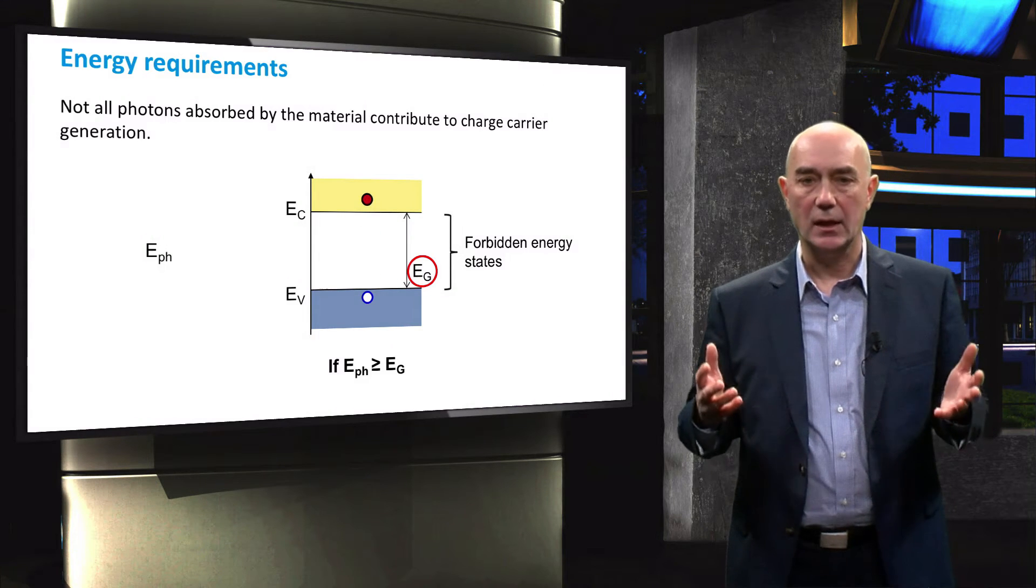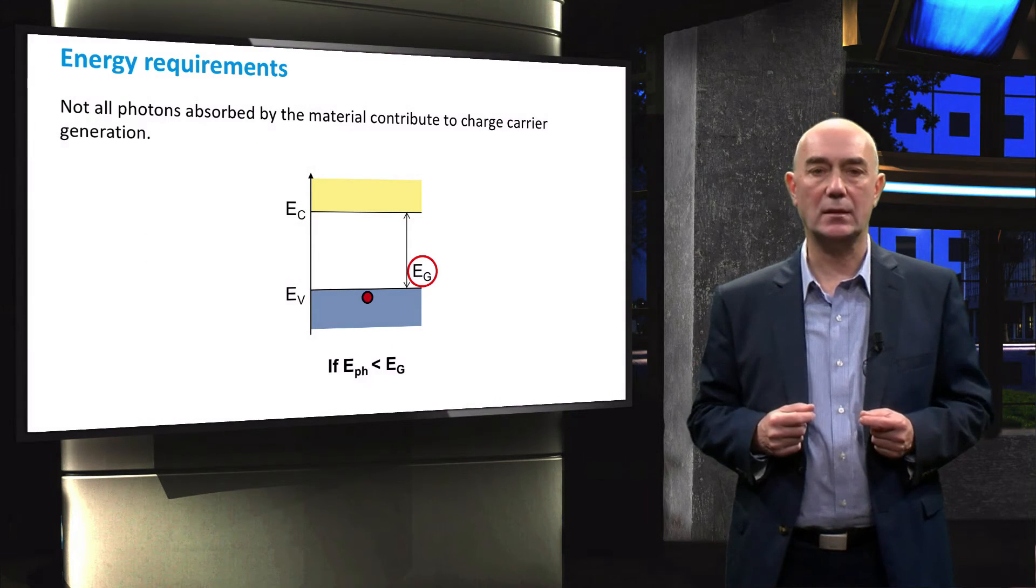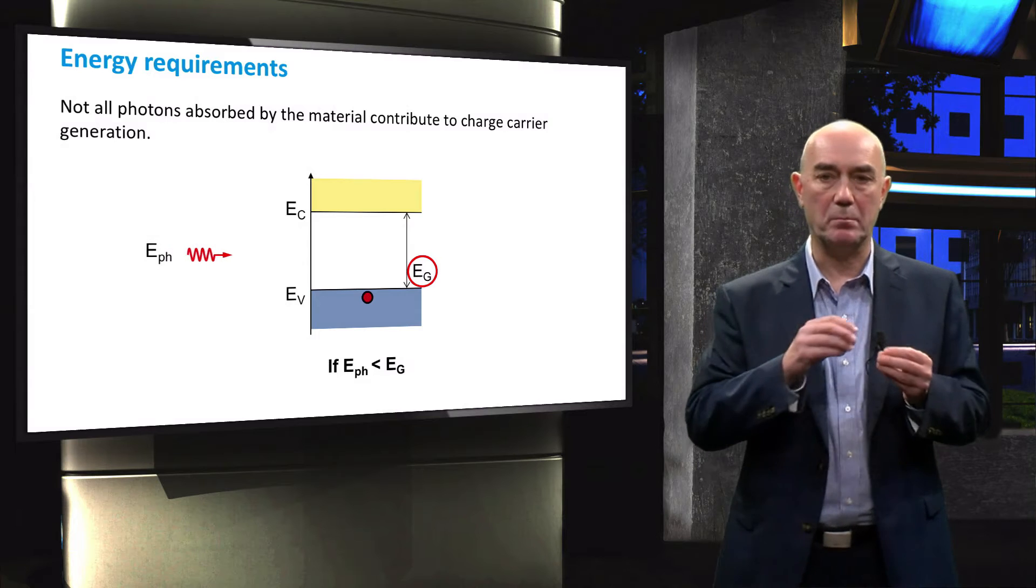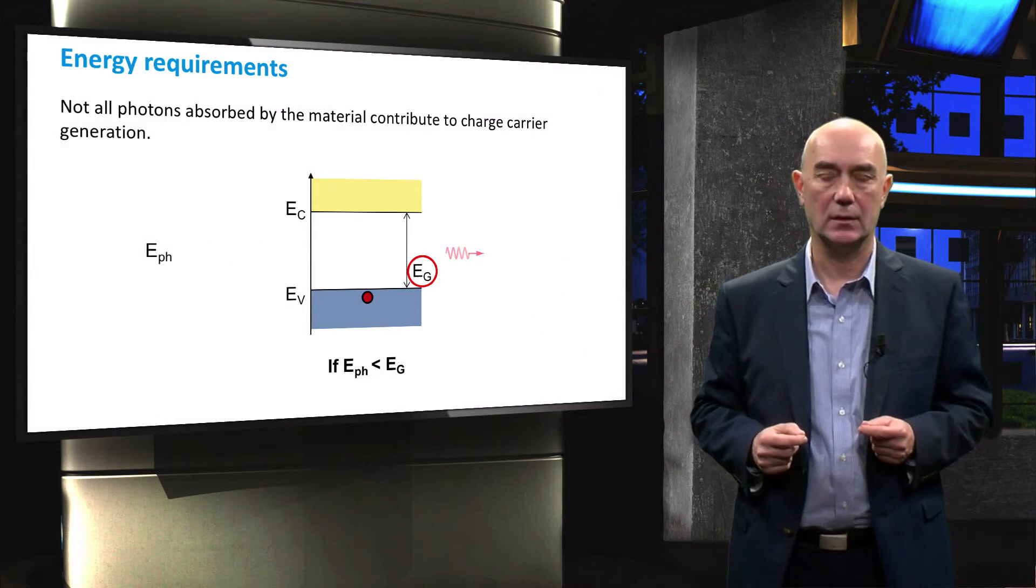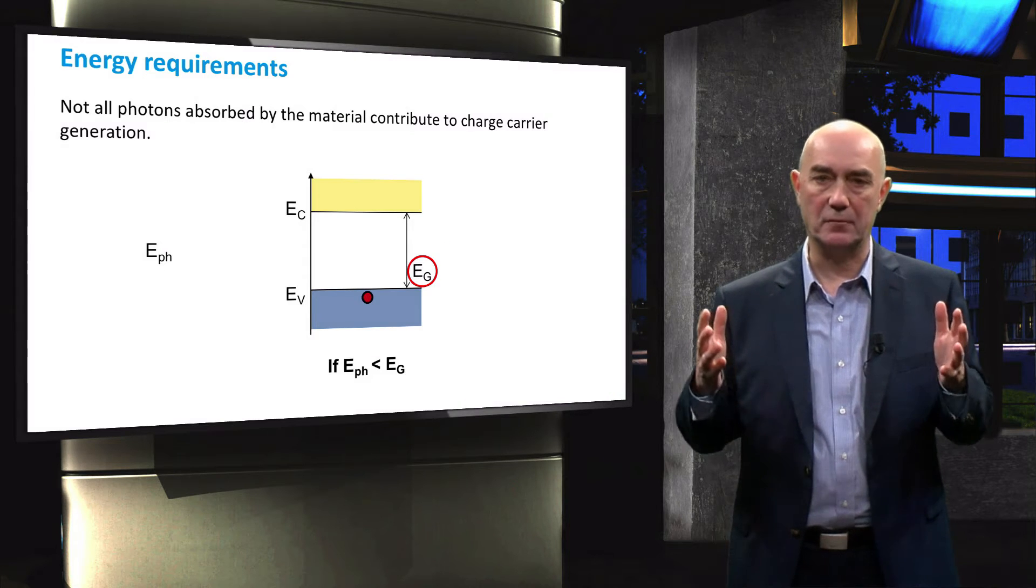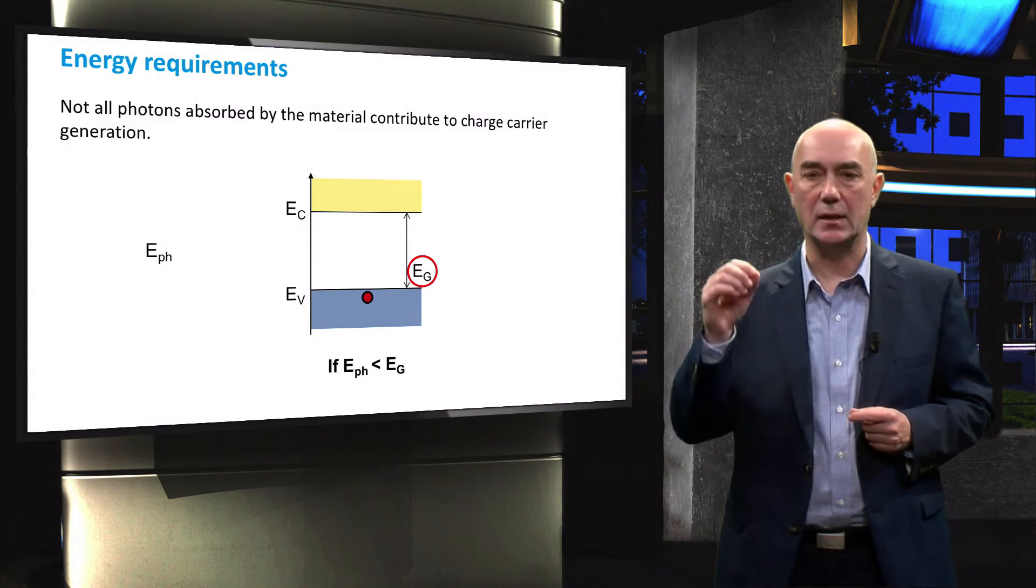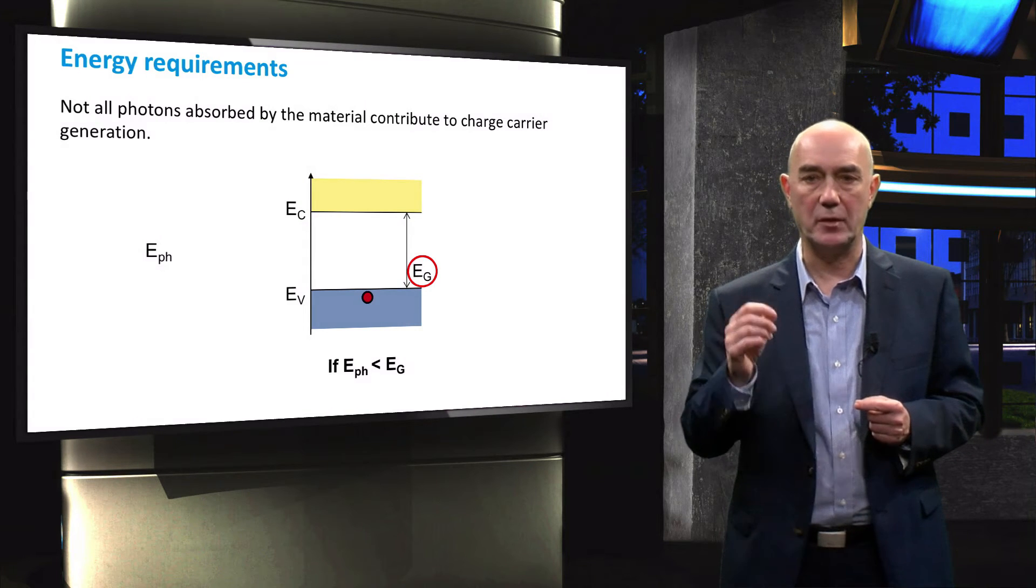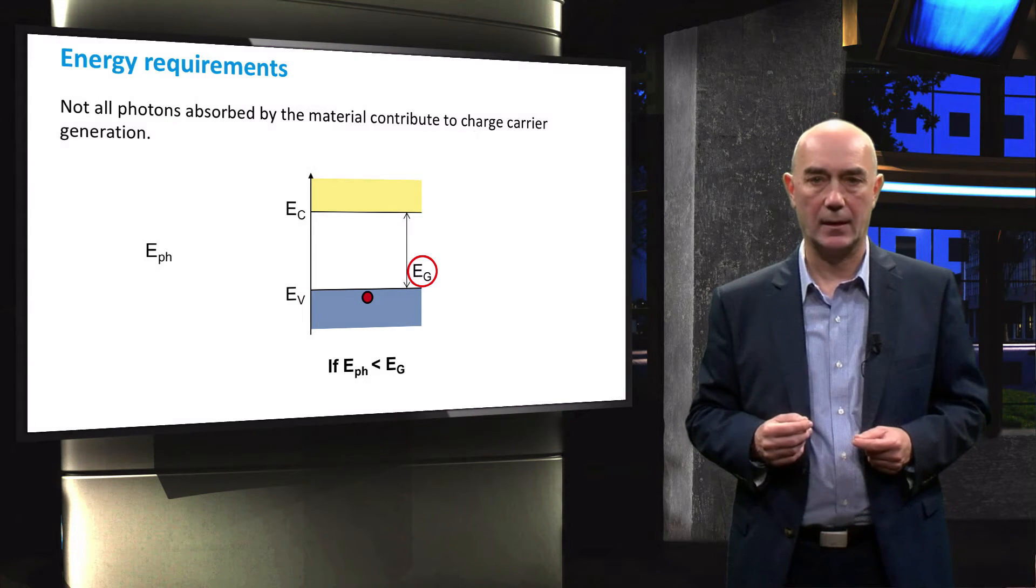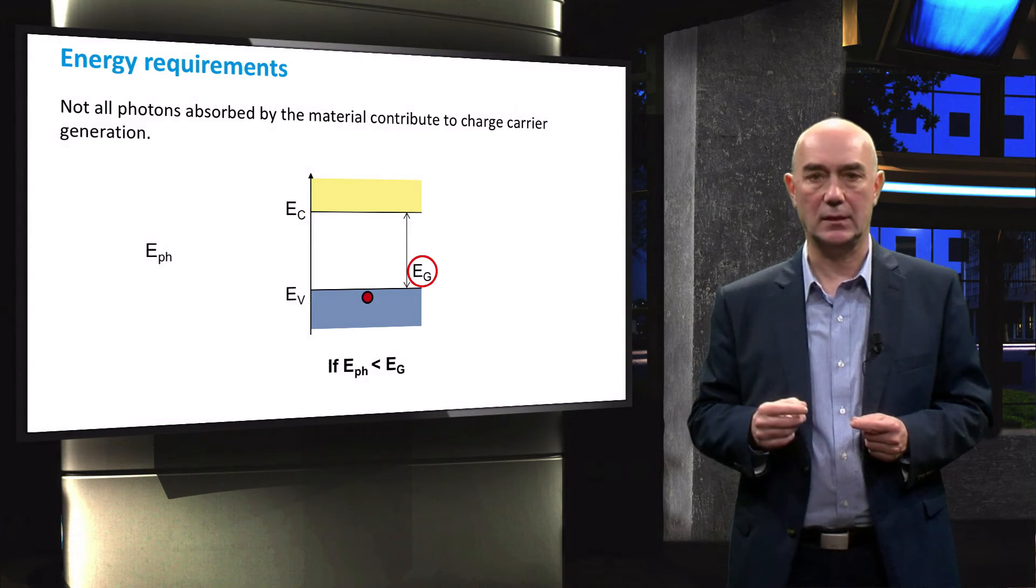However, if this requirement is not met, the photon will simply pass through the semiconductor without being absorbed. You may notice that the photon used in this example is red, whereas the photon that was absorbed in the previous examples was blue. This is intentional.